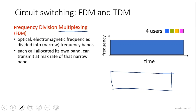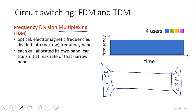You have a channel, and on one side there's a device called the multiplexer, and on the other side there's a device called the demultiplexer. This is using digital signals — so we're speaking about waves here.